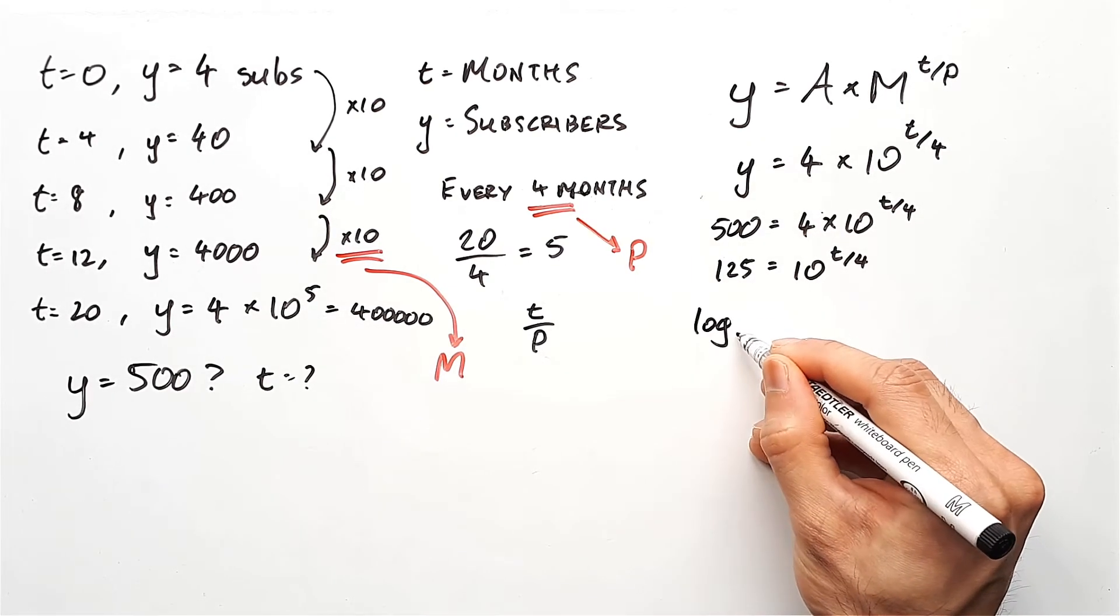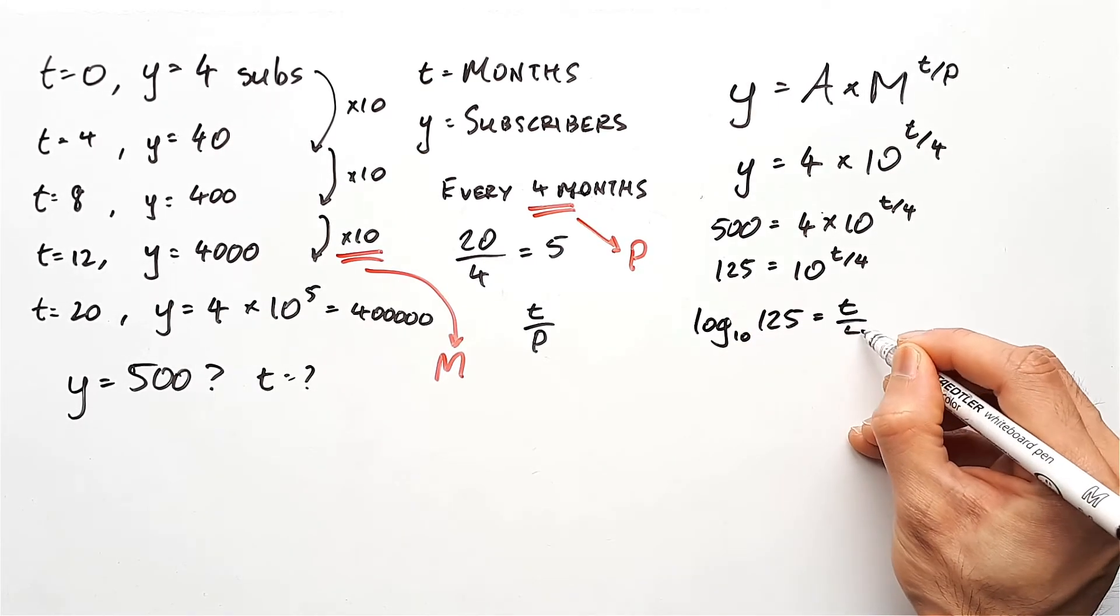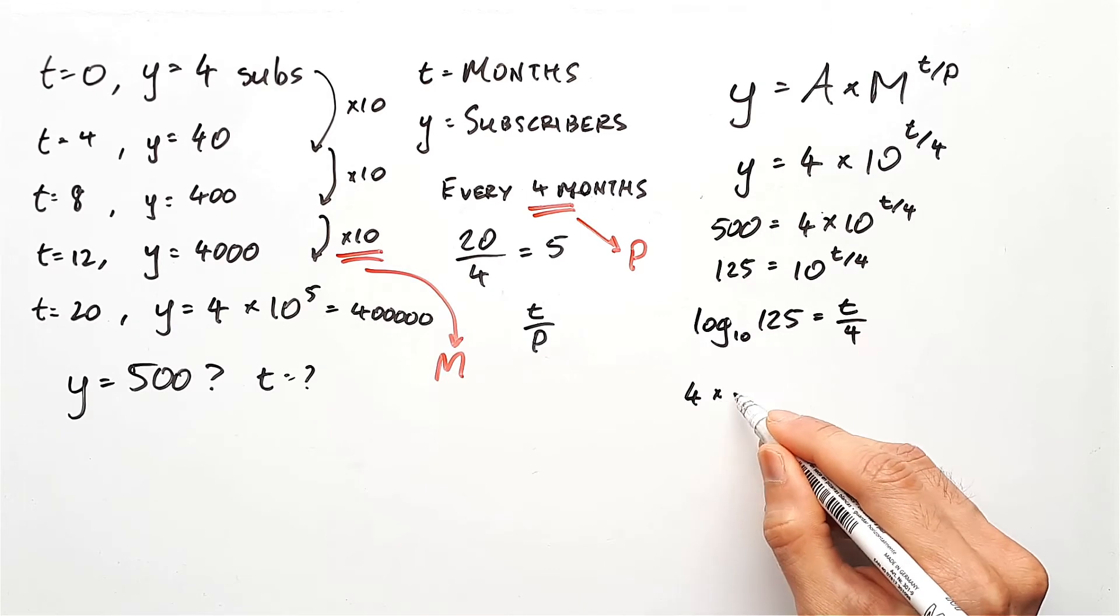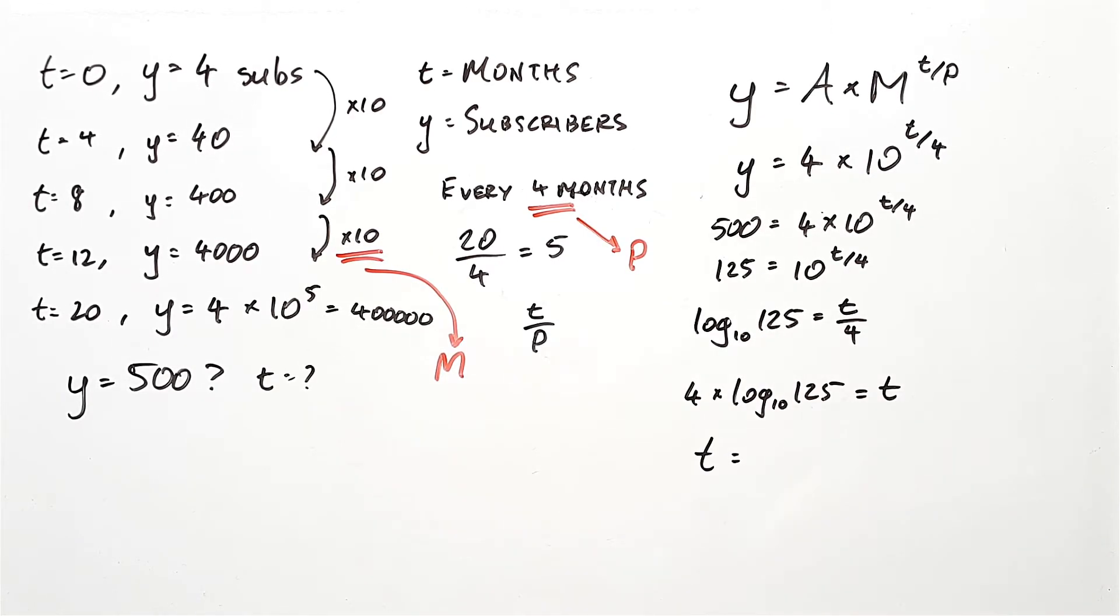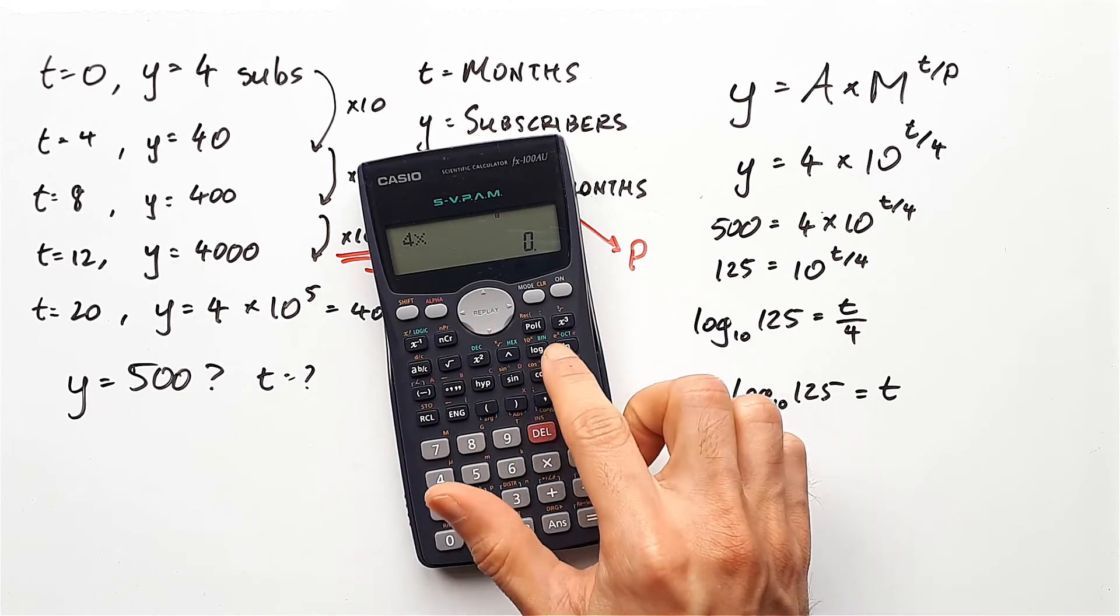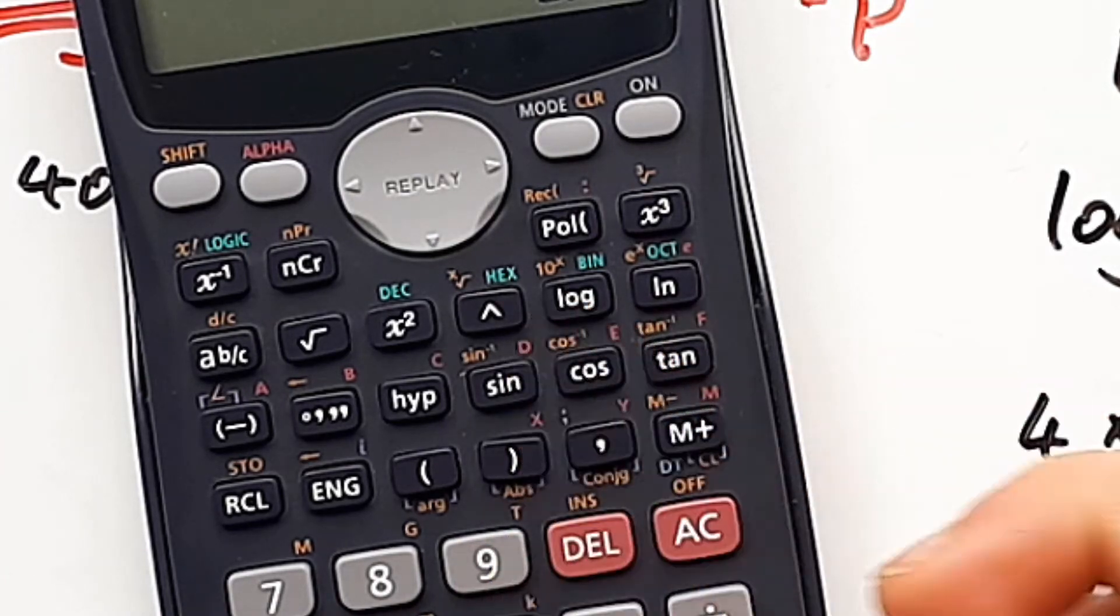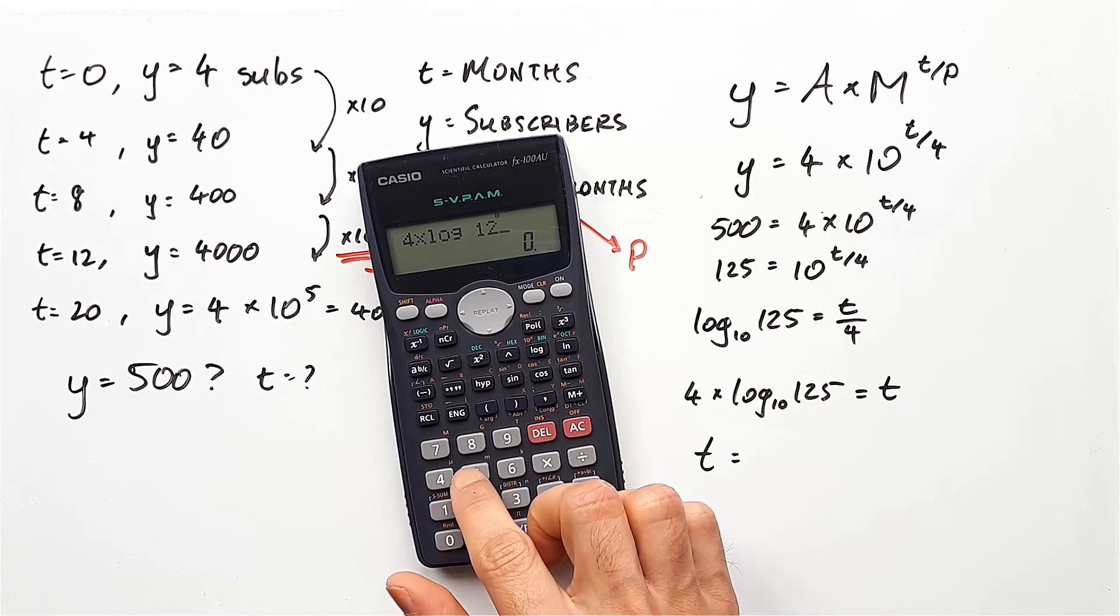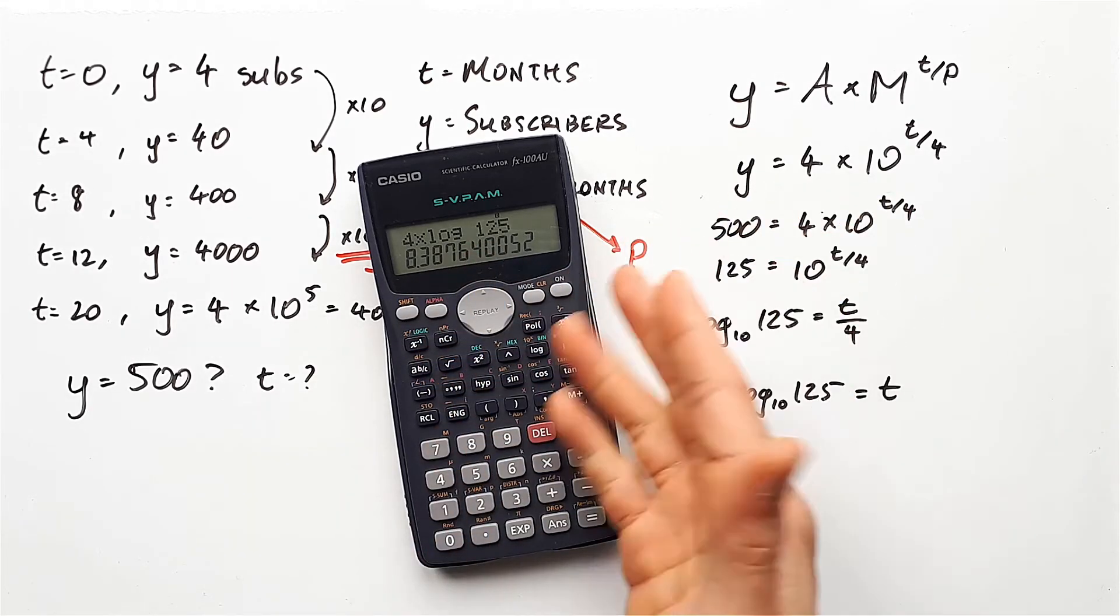And so 4 times log base 10 of 125 equals t. So all we need to do is calculate this expression here using a calculator and you will be able to figure out the value for t. So what you want to do is punch in 4 times log and that log on a calculator is always base 10, and you just put in 125 equals equals and there you go. 8.39 let's say, which I'll just round it to two decimal places. So 8.39 months.